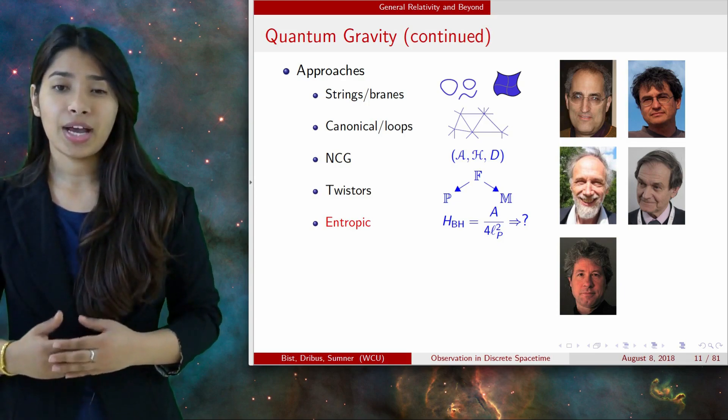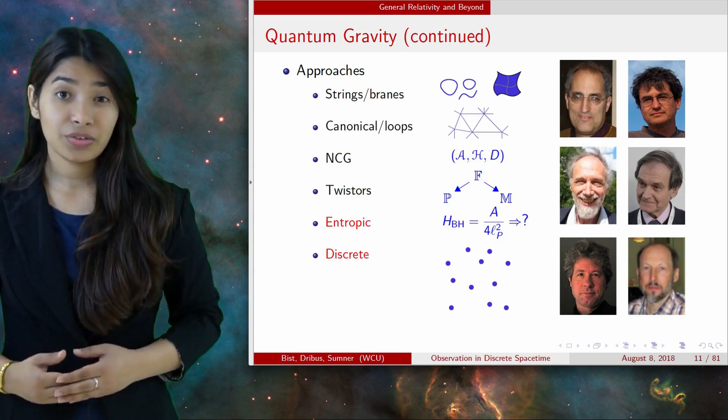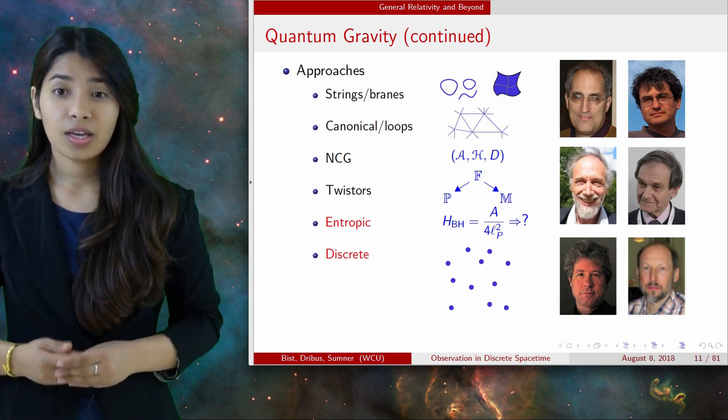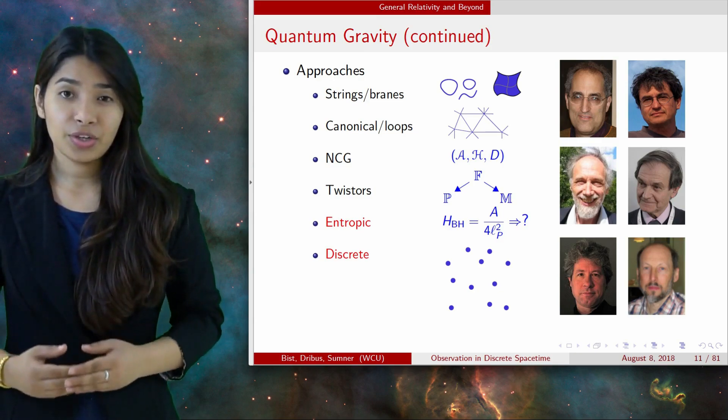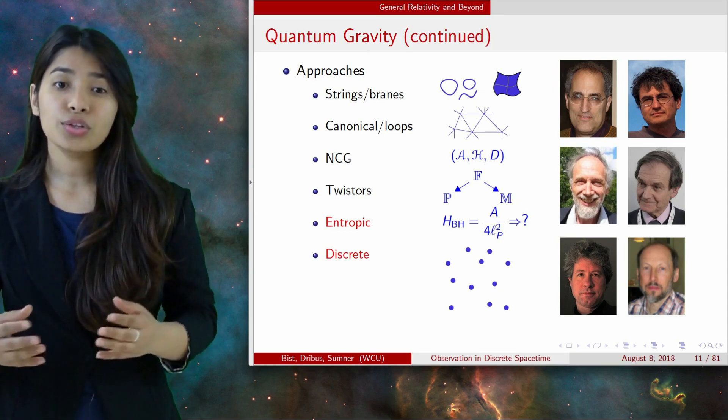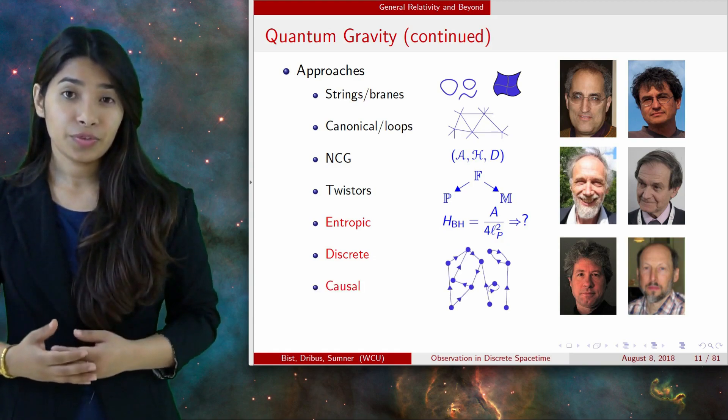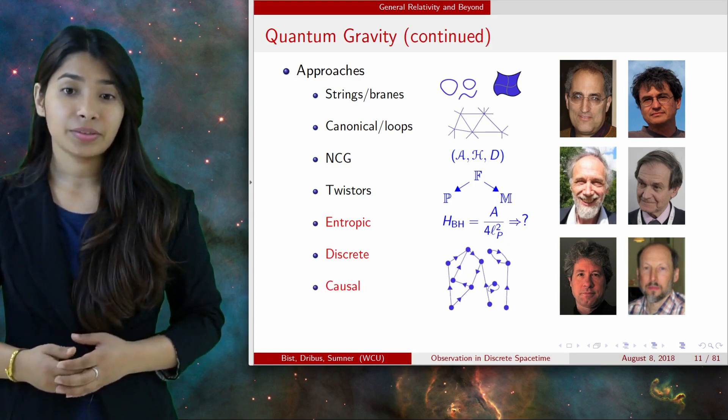Another feature that arises in multiple approaches is discreteness, which is one of our main ingredients in this lecture. It's a general trait of certain theories rather than a special approach itself. Also the idea of causal structure plays an important role for a reason that we will explain a little later.